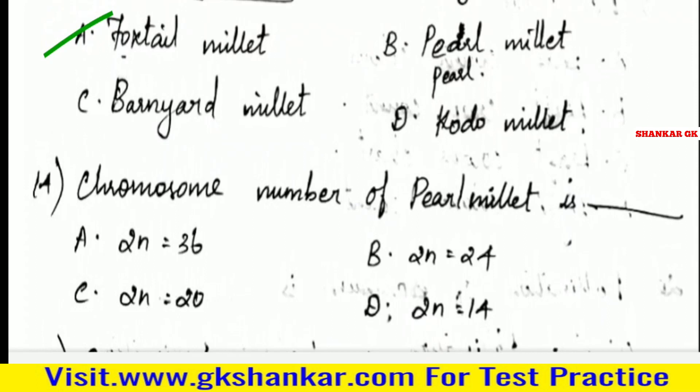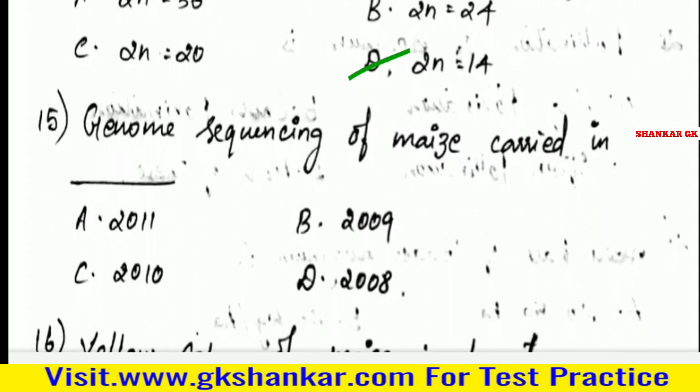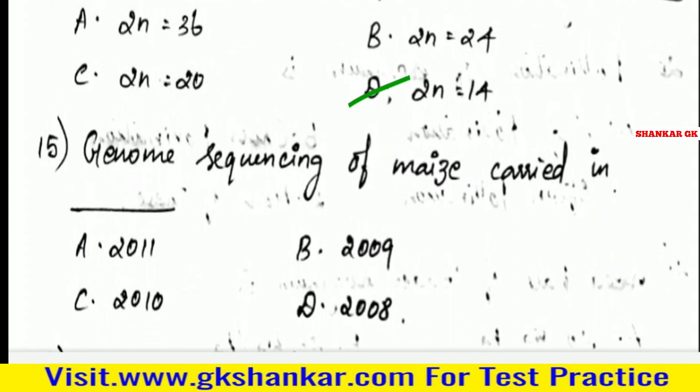Fourteenth question: Chromosome number of Pearl millet is — A. 2N=36, B. 2N=24, C. 2N=20, D. 2N=14. Answer: D. 2N=14.